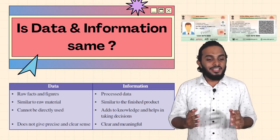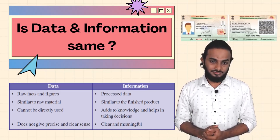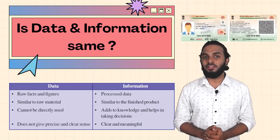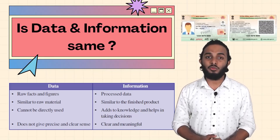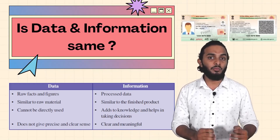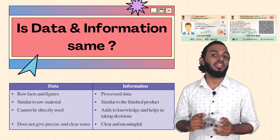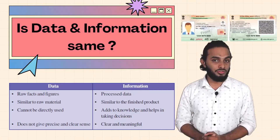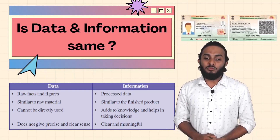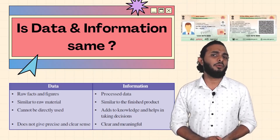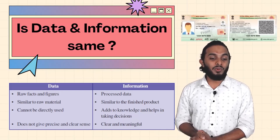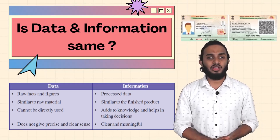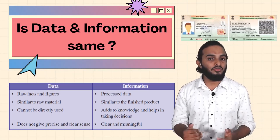Here is the difference in a table. Data is raw facts and figures, but information is processed data. Raw material in a factory is like data — we cannot directly consume raw material. But finished products are information — that's what we need to use. Data cannot be directly used. Information adds knowledge and helps in taking decisions. Data does not give a precise and clear sense; information is meaningful. So we can conclude: data is a raw fact, and a collection of data is called information.